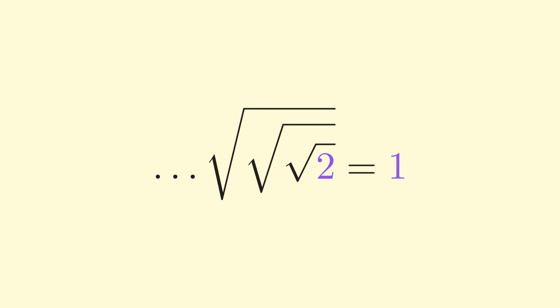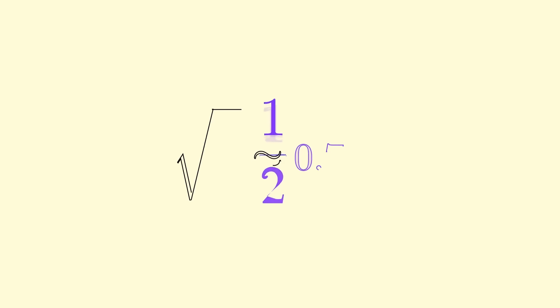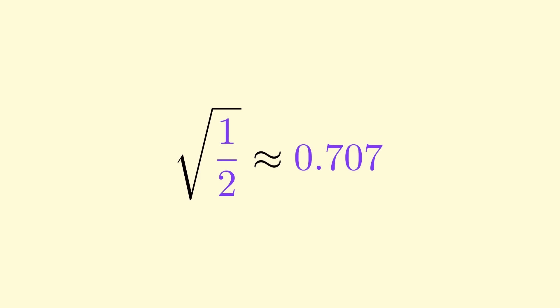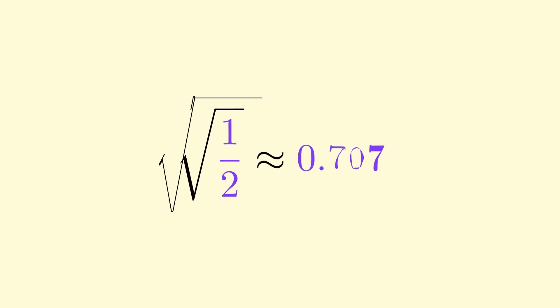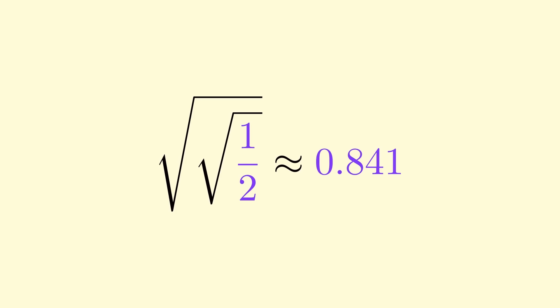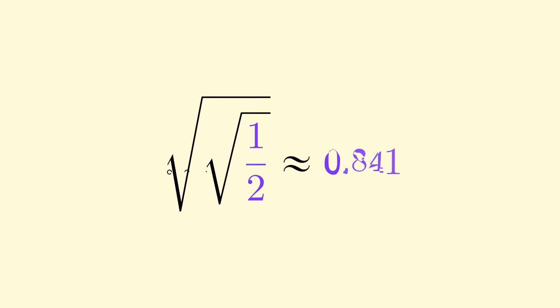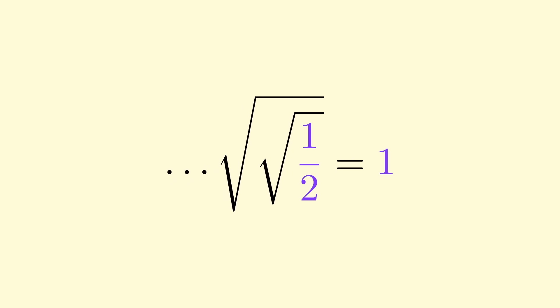Let's try the same thing again, this time with the number 1 half. If you take its square root, it gets larger. And if we take it again, it gets closer to 1. If we take the square root an infinite number of times, again, we get the number 1.